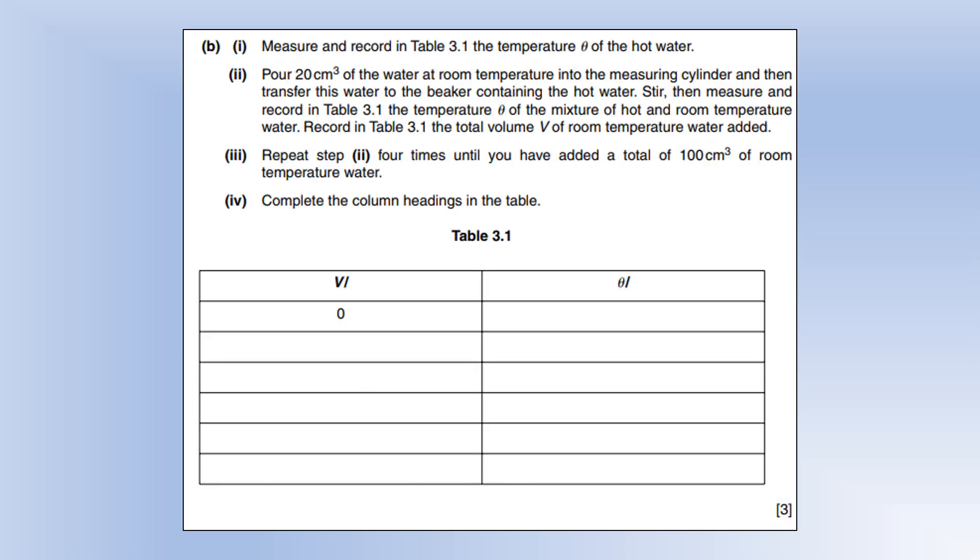We're going to measure the temperature to start with, then add some room temperature water and measure temperature again. My initial temperature using hot water was in the 70s or 80s range. Then we're adding 20 centimeter cubed intervals and measure the temperature after each addition. We'd be expecting smaller changes in temperature each time.